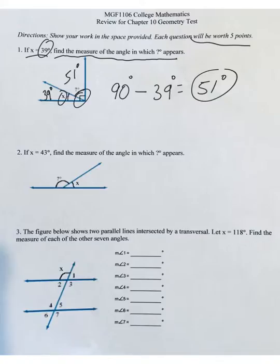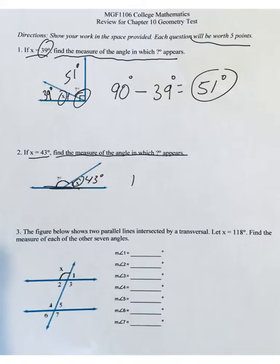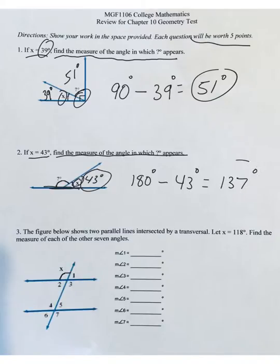Question 2: If X is now 43 degrees, find the measure of the angle in which the question mark appears. Instead of forming a box, the two adjacent angles now form part of a straight line — they sit on top of a straight line, and a straight line is 180 degrees. So I do 180 minus X, which was 43 degrees, and that gives a final answer of 137 degrees.